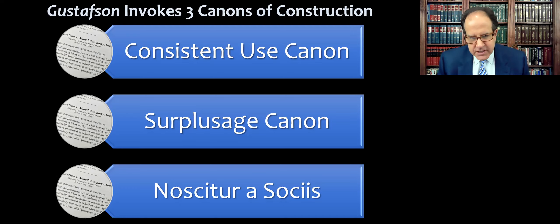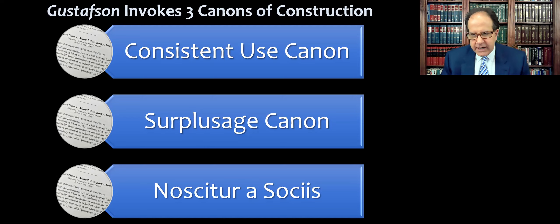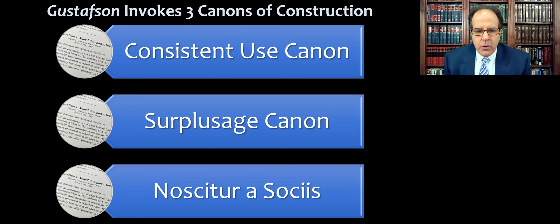Noscitur a sociis has the hardest name because it's Latin, but it's actually the most intuitive of these three. It's the common-sense assumption that you can get some sense of the meaning of words from their immediate context — look at how a word is used in the sentence. Noscitur a sociis means looking at the immediate neighbors, the words right around the word you're examining, often focusing on other words in the same sentence.